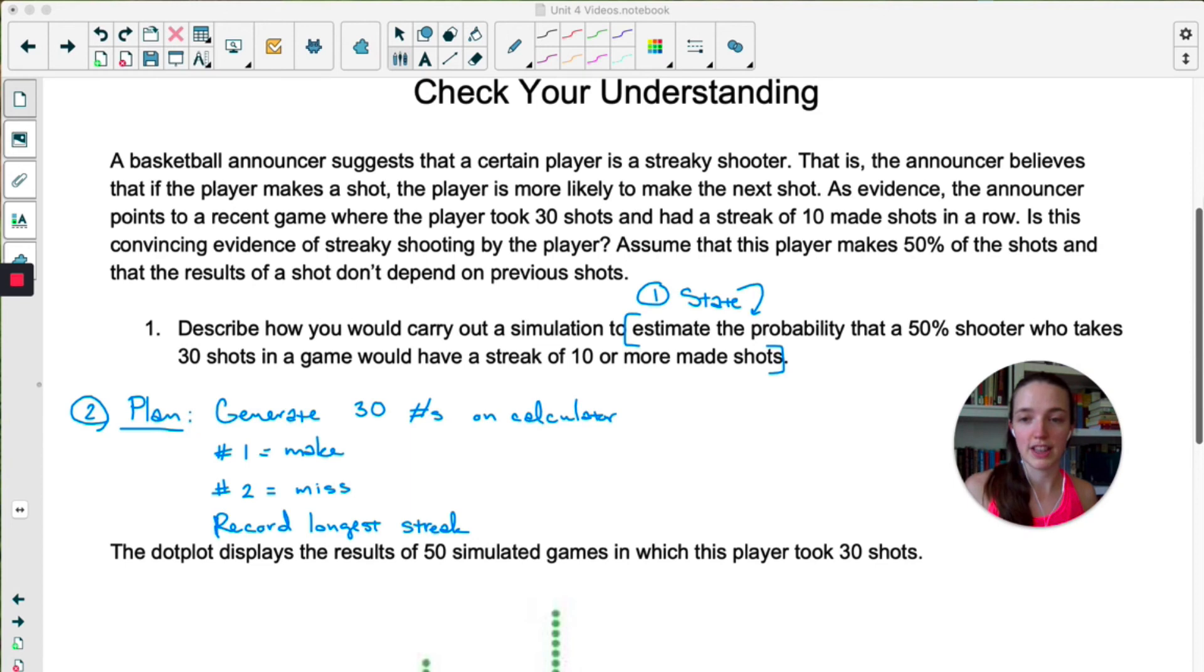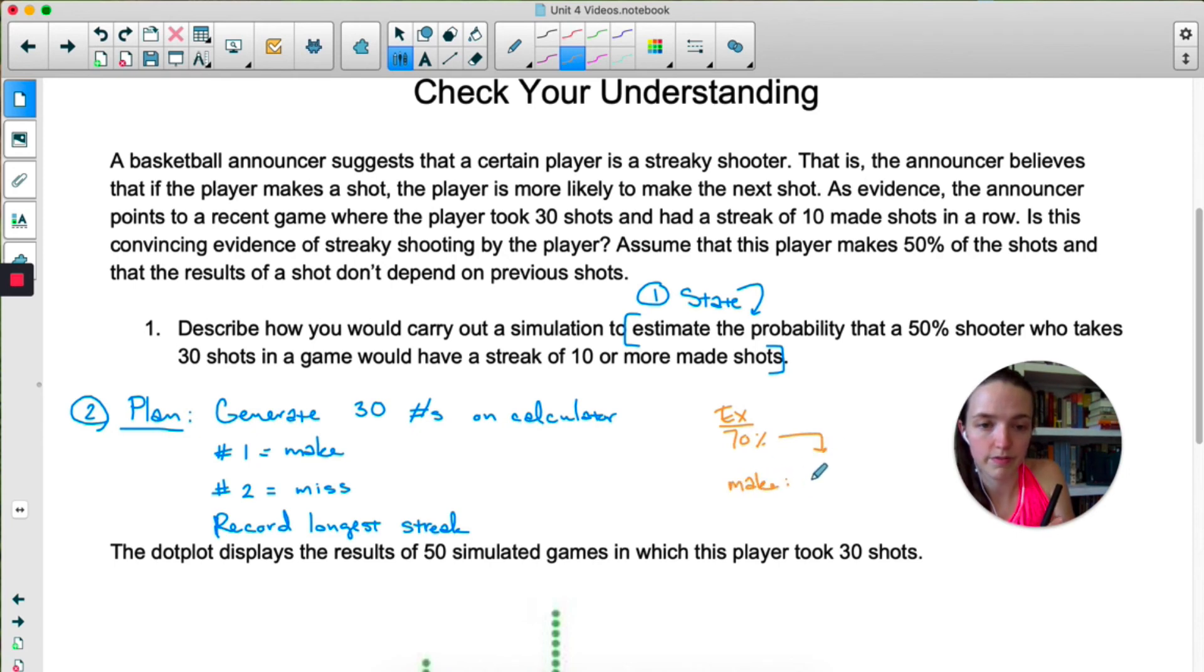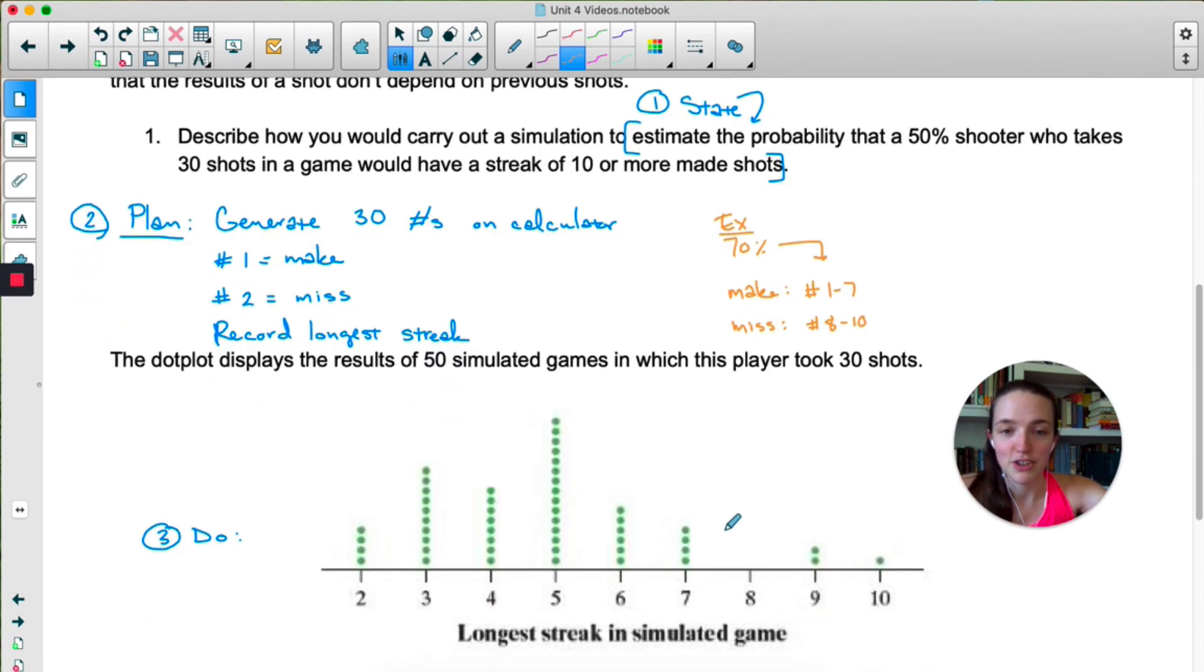For plan, what we're going to do is generate 30 numbers. Each number represents one of the shots that the player takes. I just said make one a make and two a miss. That will represent this 50% probability that the shooter makes or misses. Let's say that we knew the shooter made 70% of their shots. If we knew that the player could make 70%, I would say that the numbers 1 through 7 represent him making the shot, and 8 through 10 represent missing, because that's going to preserve that 70% probability of making the shot. But this player is making 50% of shots, so it's really easy to just do 1 and 2.